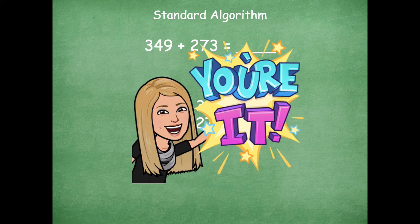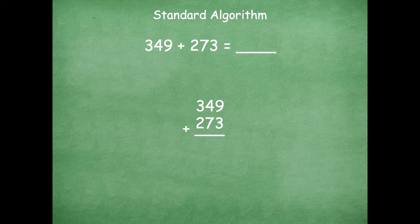Okay, here we go, friends. Make sure to pause if you need more time. All right, so we're going to start in the ones place. I know that nine ones plus three ones is 12 ones. I can rename 12 ones as one ten, two ones.